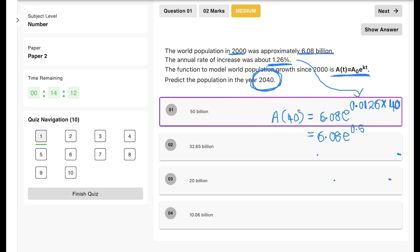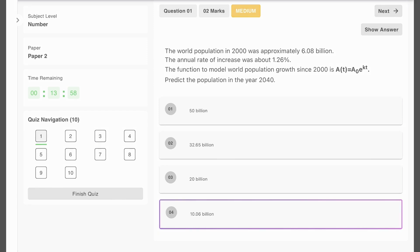Then we're going to multiply that by 6.08 billion. So this brings us to 10.06 billion, which is option number four.